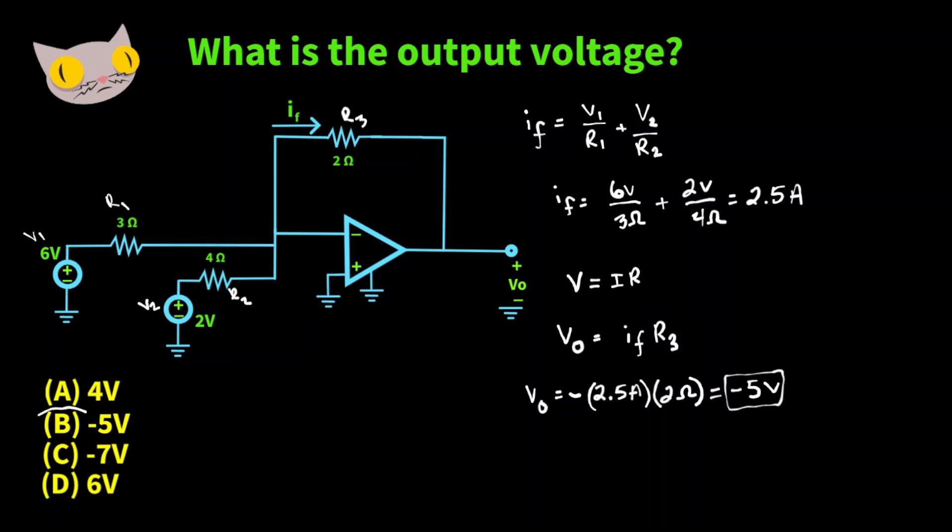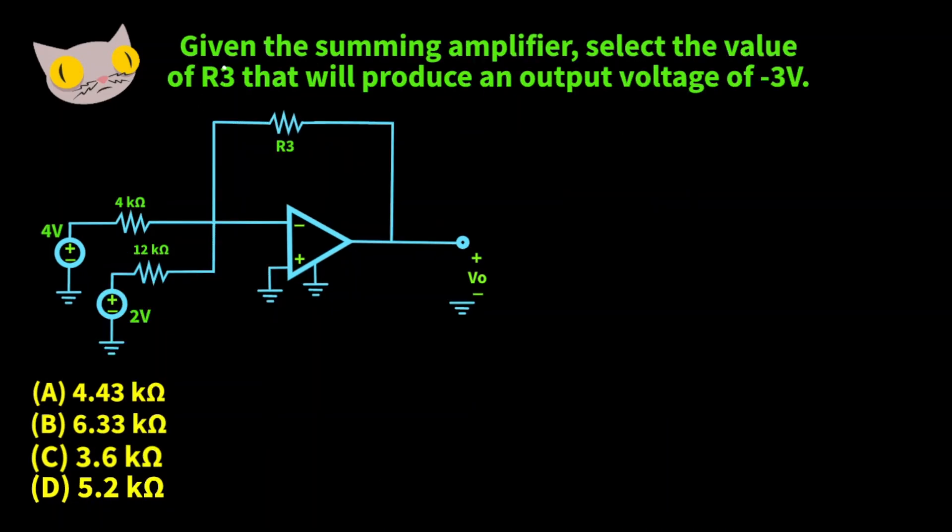So B is our answer. For this last one we're given a summing amplifier. We want to select the value of R3 that will produce an output voltage of negative 3 volts.